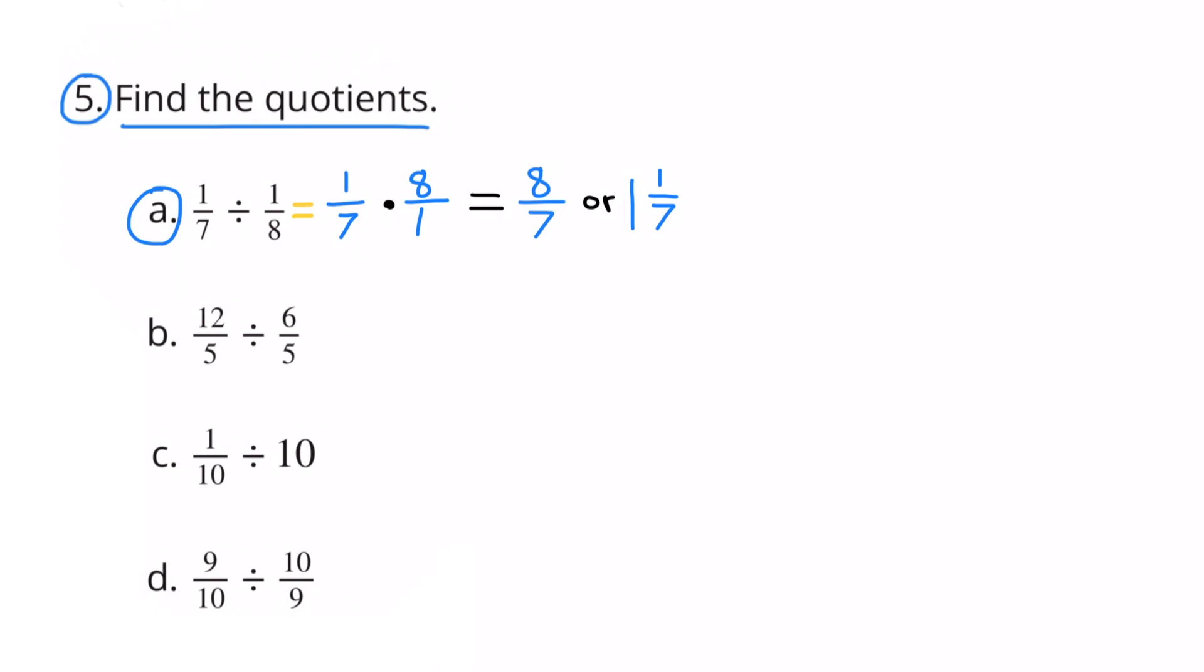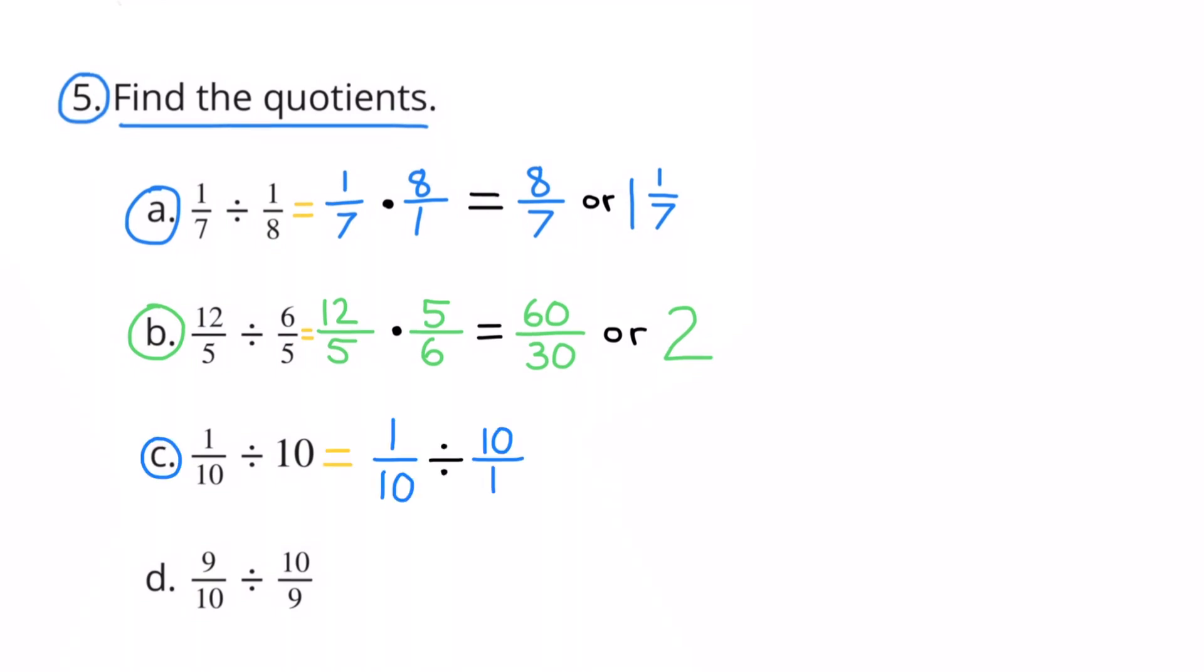5b. Twelve-fifths divided by six-fifths. That's equal to twelve-fifths times the reciprocal of six-fifths, which is five-sixths. Twelve-fifths times five-sixths equals sixty-thirtieths, or sixty divided by thirty, which is equal to two.